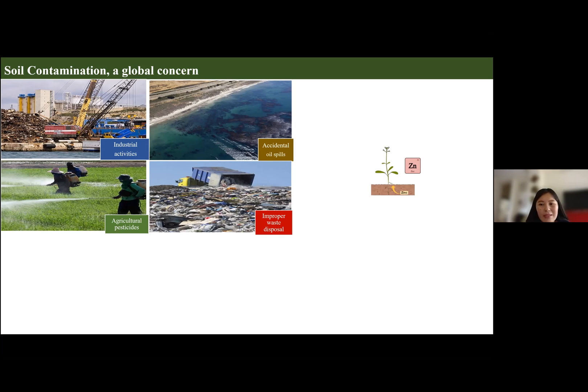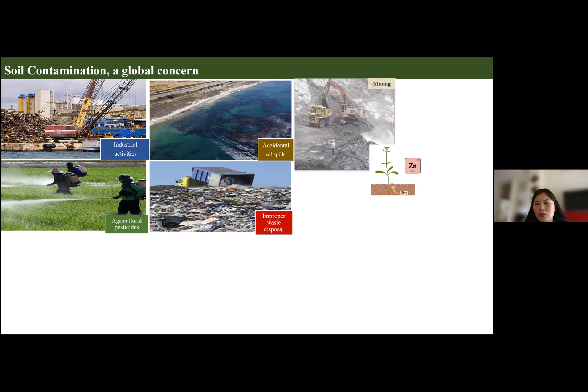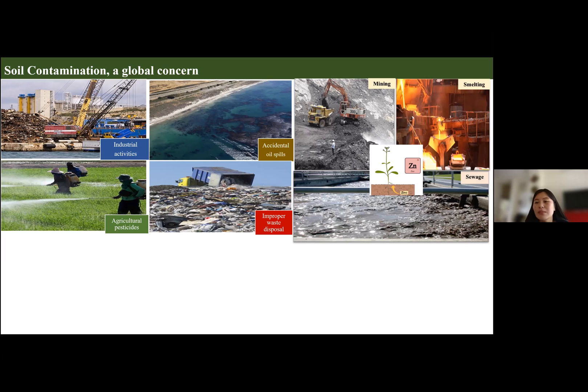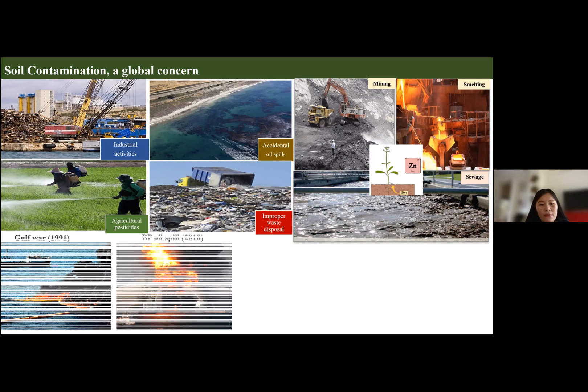One major contaminant of the soil are the heavy metals, such as zinc. Although zinc is essentially required for proper growth and development of plants, anthropogenic input of zinc through activities such as mining, smelting, and application of sewage sludge has substantially increased the level of zinc, negatively affecting crop yield and soil fertility.